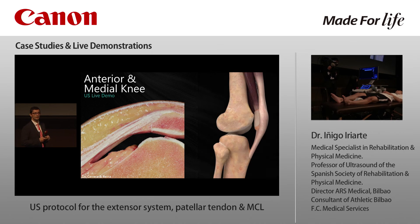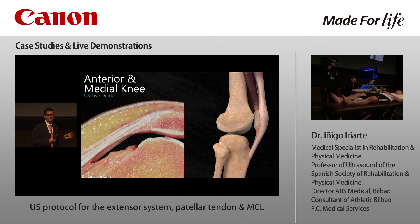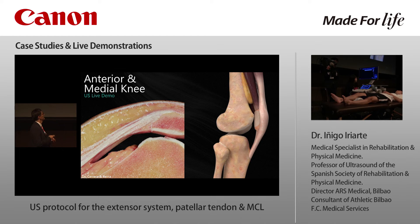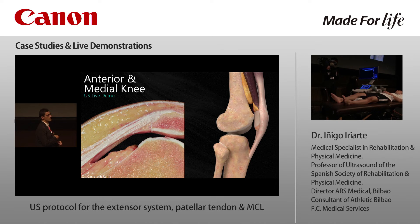Now we are going to see other structures: fat pads. There are two more fat pads in the anterior side of the knee — the prefemoral fat pad with its round shape and the suprapatellar fat pad with its triangular shape. Between these two fat pads we will find the recess of the knee joint, which is an important location for injections.